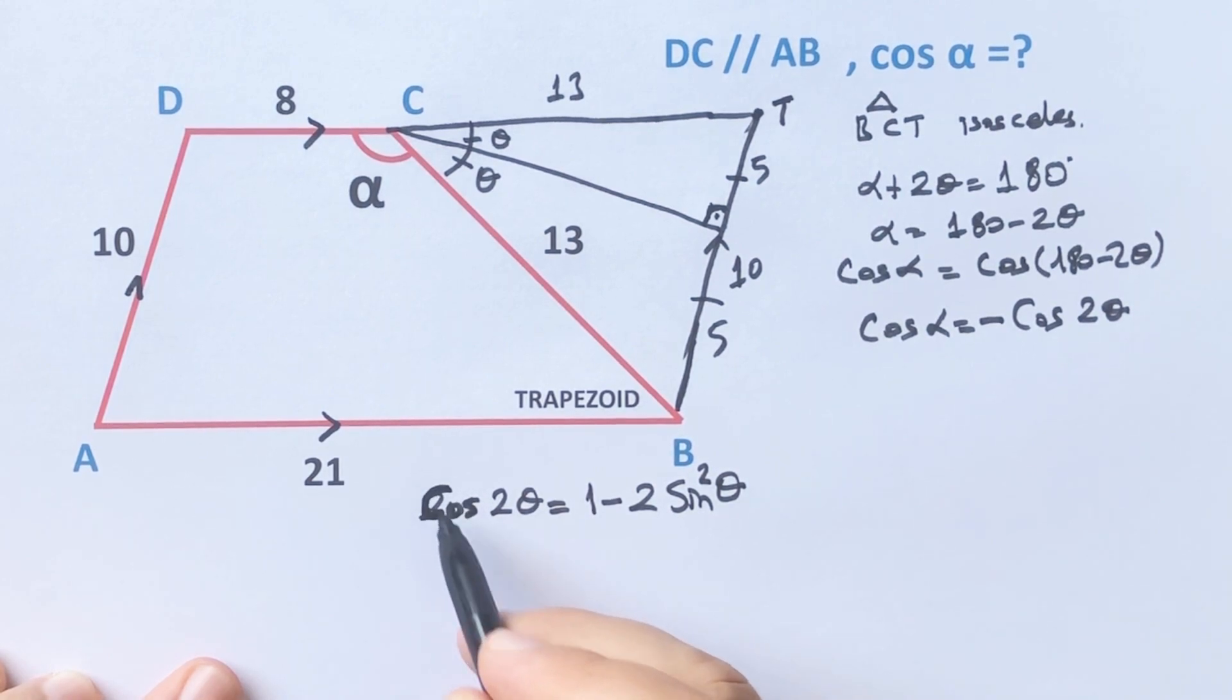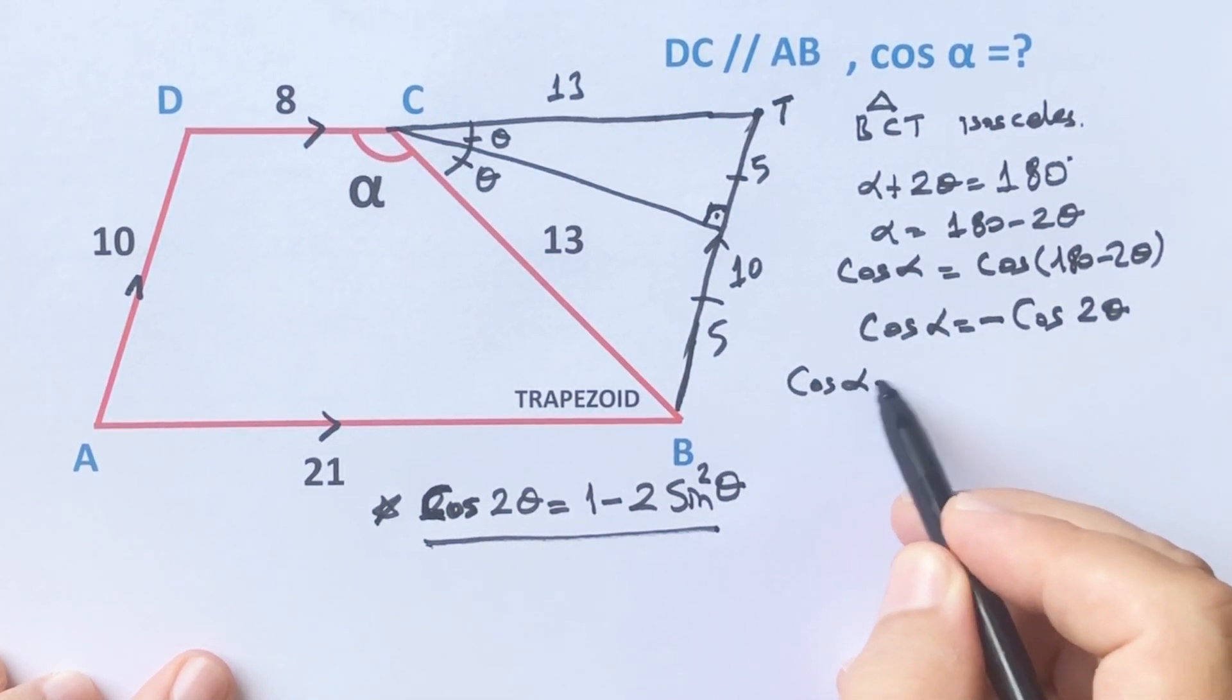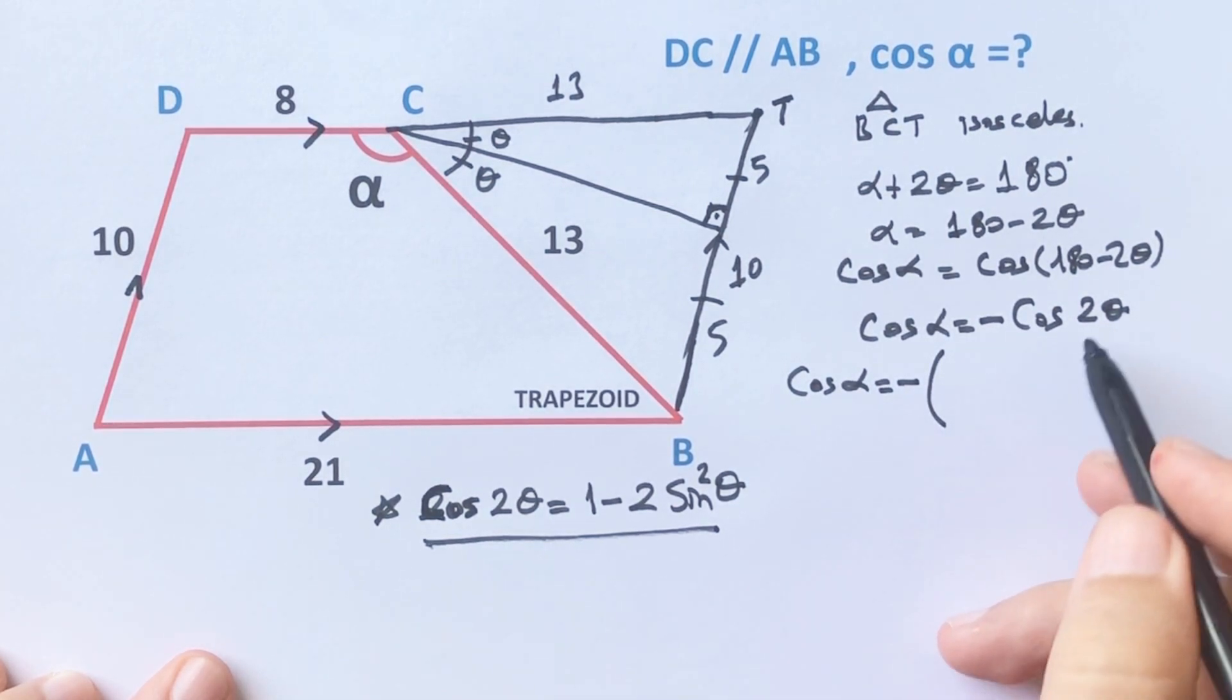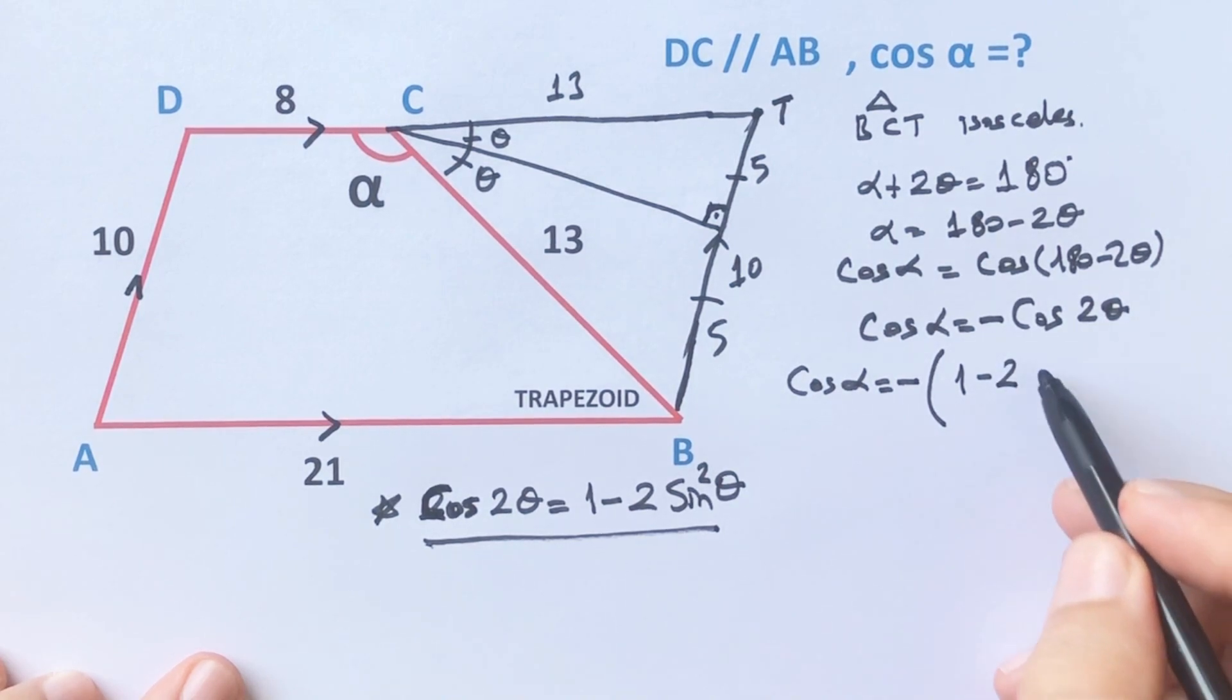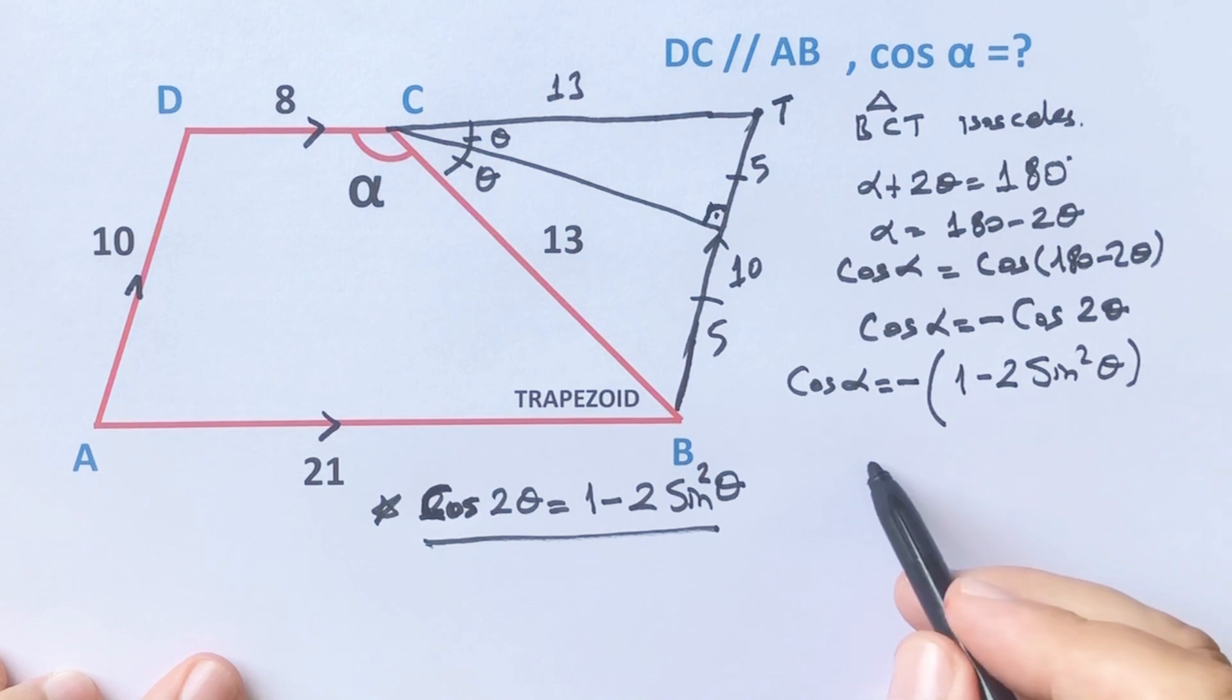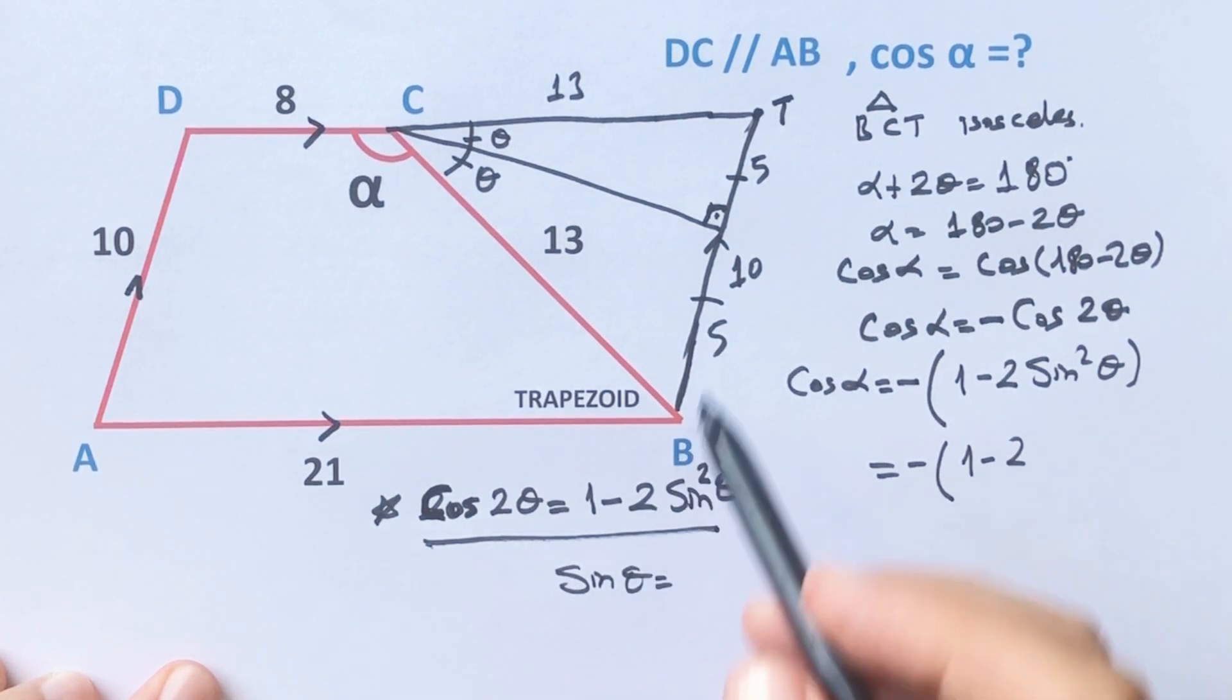Okay, therefore if you plug in this value to the equation, cosine alpha equals minus in parenthesis 1 minus 2 times sine squared theta. So sine squared, we know that sine theta equals 5 over 13.